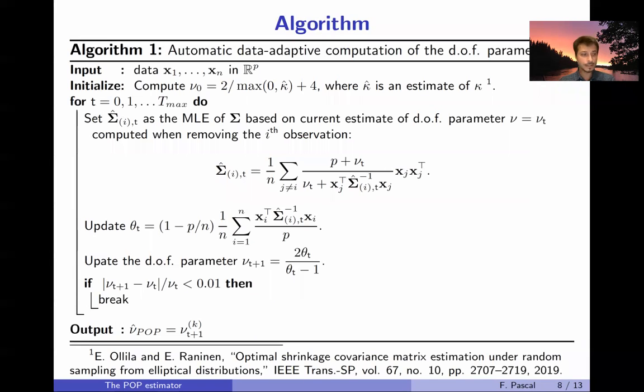So the main idea is to alternatively estimate both quantities. This is contained in this algorithm. We have the data as input. Let's start with I would say not so bad initialization for the degree of freedom, so we compute thanks to this quantity relying on the kurtosis of the data. So it comes from this paper.